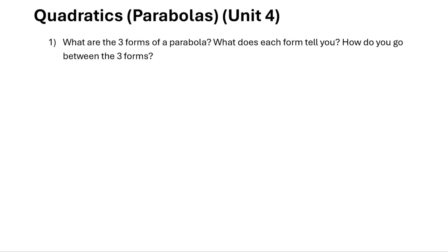The quadratics unit is all about polynomials where the largest power is x squared. The first question asks: what are the three forms of a parabola and what does each form tell you? How do you go between the three forms? One form is the standard form, and that is y equals ax squared plus bx plus c.